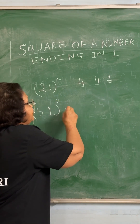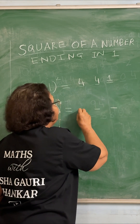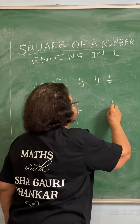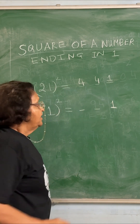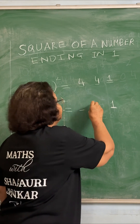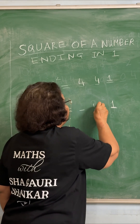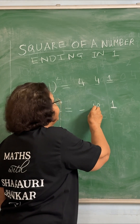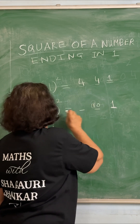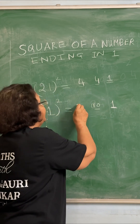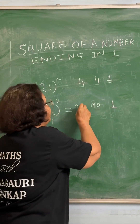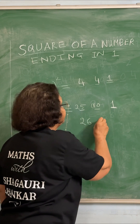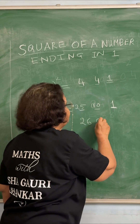Supposing we want the square of 51. We will write 1 as it is. We will double 5 — 5 into 2 is 10. But here we want a 1-digit number, so we will carry this 1. And 5 squared is 25, so this will become 2601.